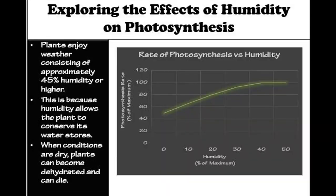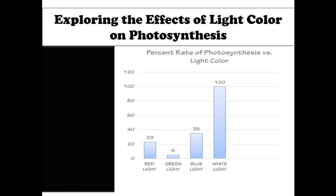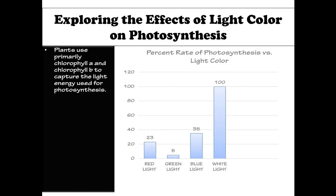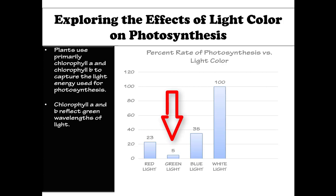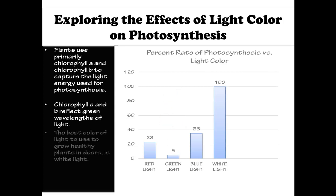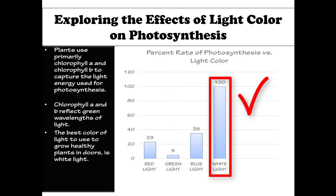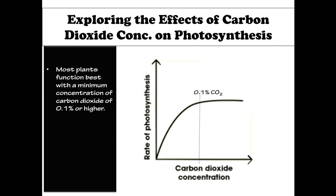Plants enjoy weather consisting of approximately 45% humidity or higher, because humidity allows the plant to conserve its water stores. When conditions are dry, plants can become dehydrated and can die. When we look at the effects of light color on photosynthesis, plants use primarily chlorophyll A and chlorophyll B to capture light energy. Since chlorophyll A and B reflect green wavelengths, the best color of light to grow healthy plants indoors is white light, and the worst choice would be green light. Most plants also function best with a minimum carbon dioxide concentration of about 0.1% or higher.